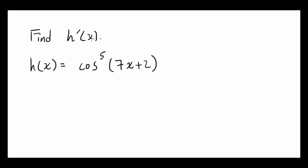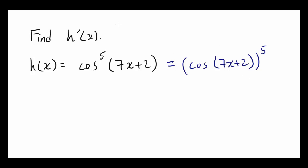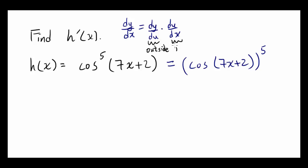Find h prime of x, where h of x is cosine to the fifth power of 7x plus 2, also known as cosine of 7x plus 2 raised to the fifth power. To find the derivative, we start by remembering that dy/dx equals dy/du times du/dx, as stated in the chain rule. This means the derivative of the entire function is the derivative of the outside function times the derivative of the inside function.